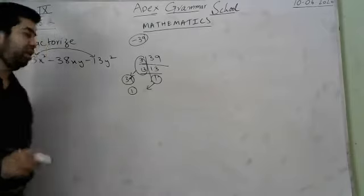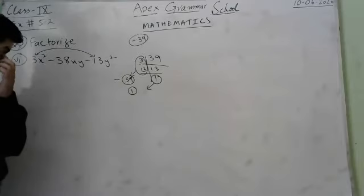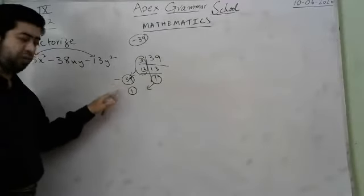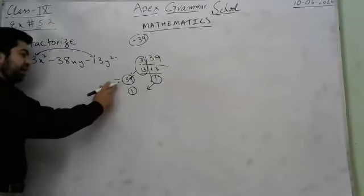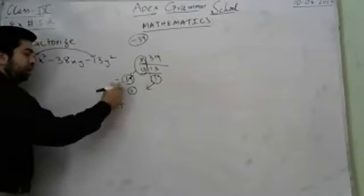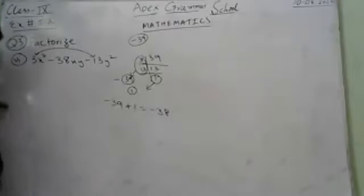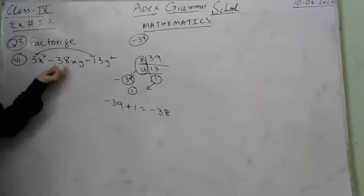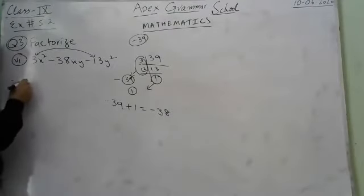The alternative is to apply the minus sign with 39: minus 39 times 1 gives minus 39, and minus 39 plus 1 gives minus 38. This verifies our answer, so the pair minus 39 and plus 1 works.